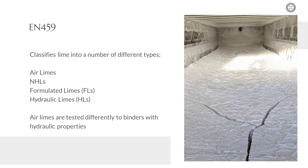Starting on EN459, it classifies lime into three main categories. You have air limes, you have natural hydraulic limes, and you have the two artificial hydraulic limes — both formulated and hydraulic limes. Air limes are typically tested chemically; however, the other three are usually tested through mechanical means as well.